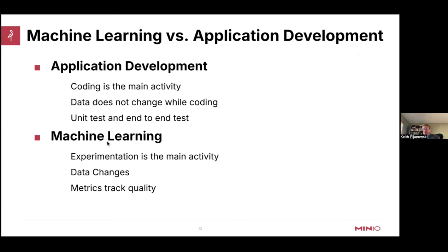Machine learning, on the other hand, is in many ways almost the exact opposite. Instead of coding, experimentation is the main activity. Using libraries like PyTorch or TensorFlow, you really don't have to write a lot of code — they've encapsulated all the mathematics and tensor operations. Data changes all the time; you'll do feature engineering to squeeze better results out of your model. And you use metrics to track the quality of your machine learning model — metrics during training as well as on a test set your model has not seen.